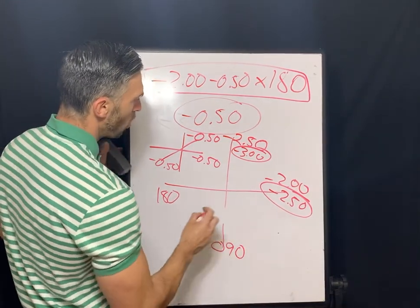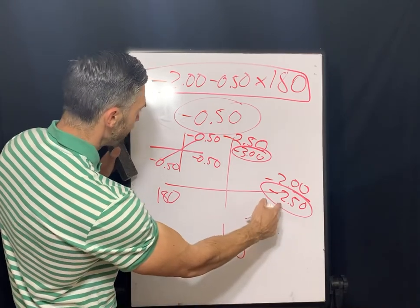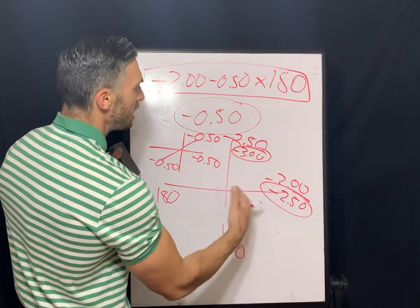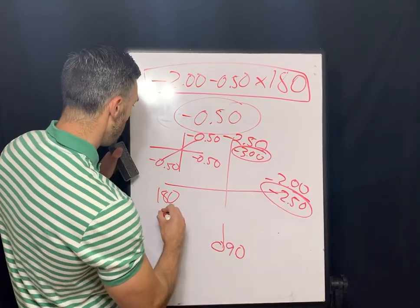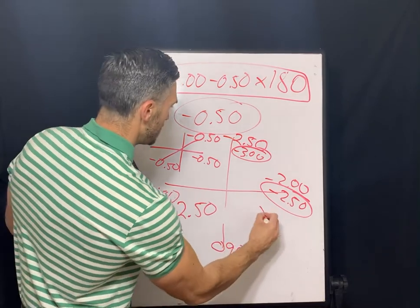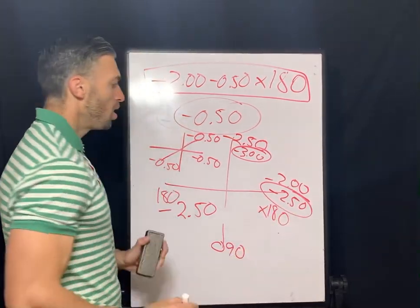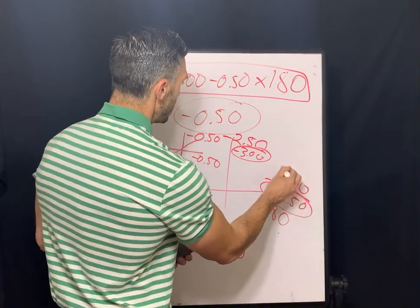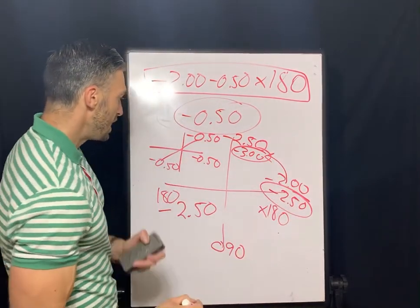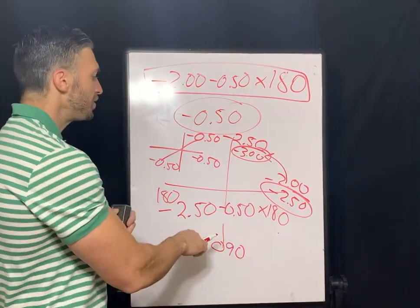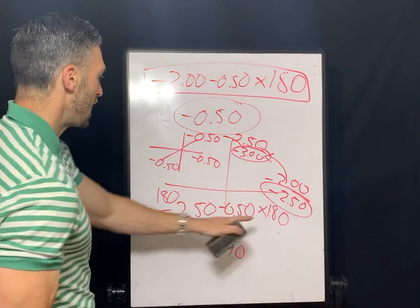But let's take this off the optical cross now. So we're going to start with our minus 2.50 at 180, because we start with our least minus or more plus power there. So minus 2.50, just write the axis down 180. When you take something off the optical cross, you're asking yourself, how far am I traveling from a negative 2.50 to a negative three? That's a half a diopter. So we have negative 2.50, negative a half at axis 180.